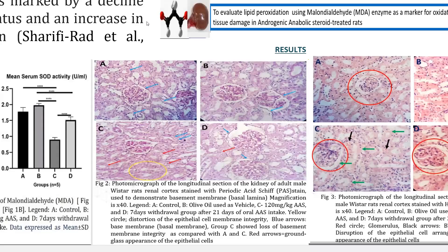Looking at the histopathological slides using PAS staining, we found the basement membrane intact in the control and olive oil groups, as shown by the blue arrow. However, in the AAS-treated group, we can see fragmentation of the glomerulus, rupture of the renal tubule shown by the yellow circle, ground-glass appearance of the epithelial cells of the renal tubules, blood cells between the renal tubules, and distortion of the basement membrane of the epithelium. In the withdrawal group, we can see gradual regeneration and replacement of the basal lamina and protection of those cells.